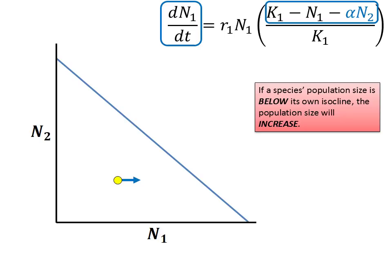The exact opposite is true if the combination of populations places the point above the isocline. So let's assume that we have an n1 the size of this. In order to fit the zero growth isocline, species 2 would have to have a population size right about here. But what if there were more of species 2 than that? Now we have a point that is above the species 1 isocline.